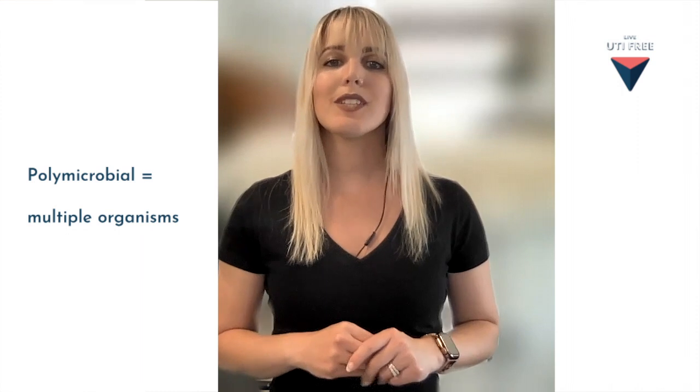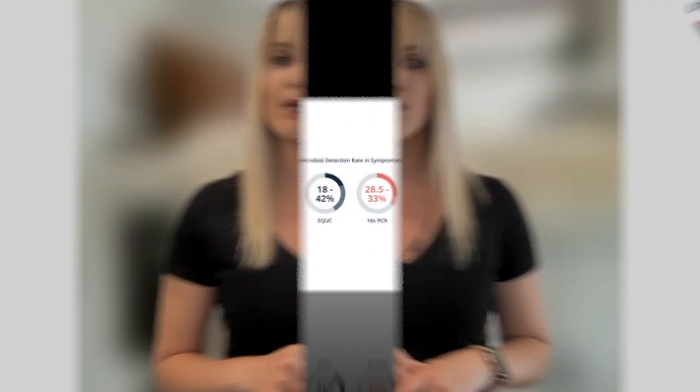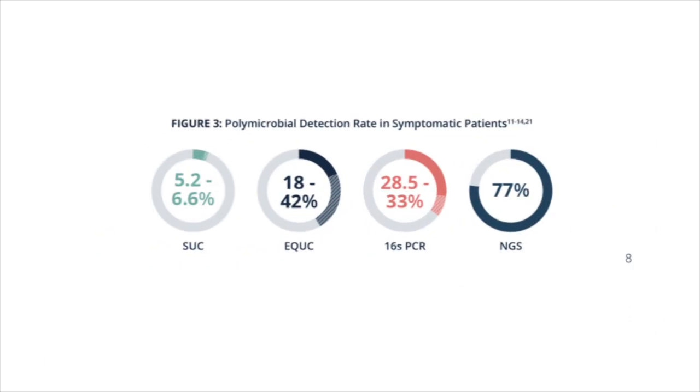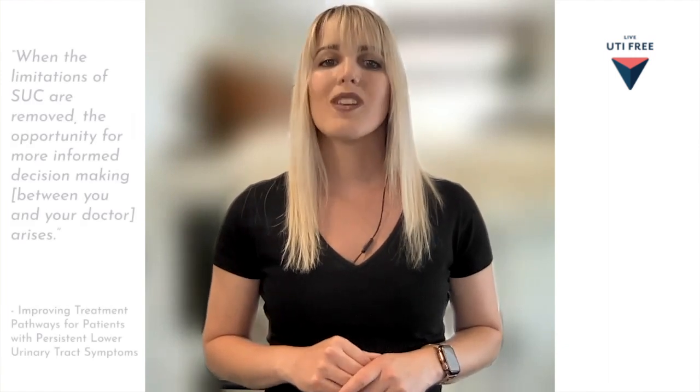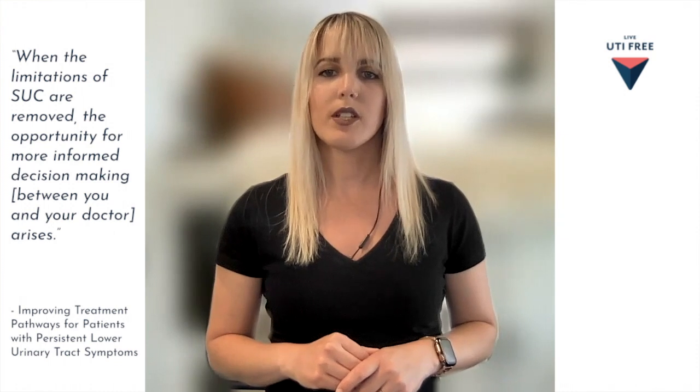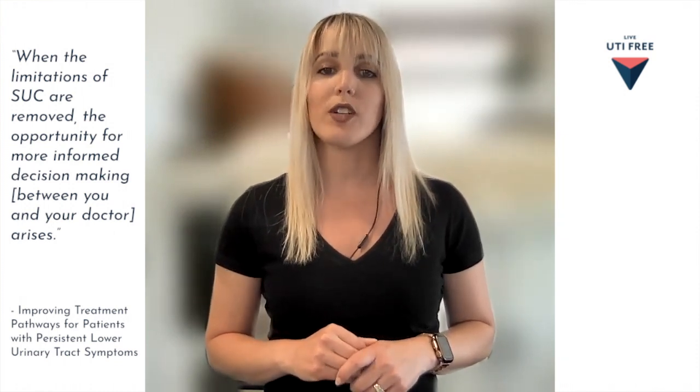Speaking of identifying organisms that may need to be treated or left alone, let's talk about contamination versus polymicrobial infections. In a study using EQUC, in 81% of the samples in which E. coli was detected, at least one additional pathogen was also found. This suggests that UTIs often believed to be caused by one dominant pathogen may, in fact, be due to multiple organisms. When you receive a SUCC report labeled mixed growth or contamination, these results do not necessarily indicate contamination — they could be identifying infections with multiple pathogens that the lab is failing to report. When the limitations of standard urine culture are removed, the opportunity for more informed decision making between you and your doctor arises.